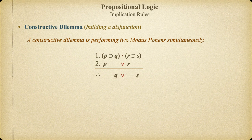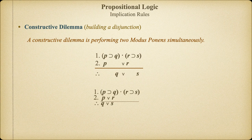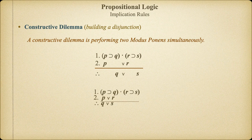Hence our conclusion has to be a disjunction as well. In essence, with constructive dilemma, we're using modus ponens to create a disjunctive conclusion. We're creating a choice. We're building a dilemma. It's a constructive dilemma.